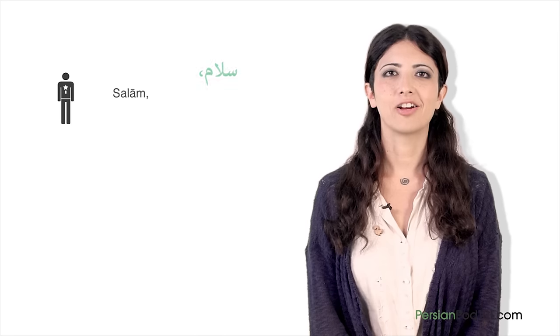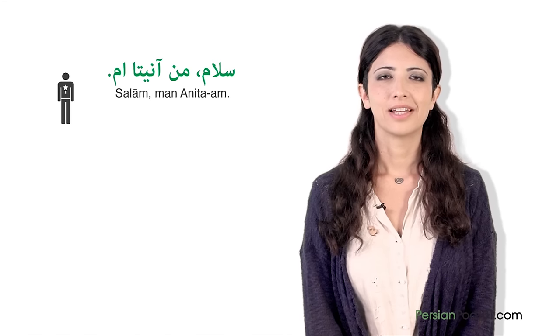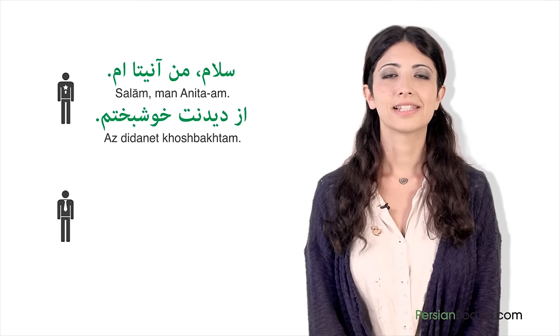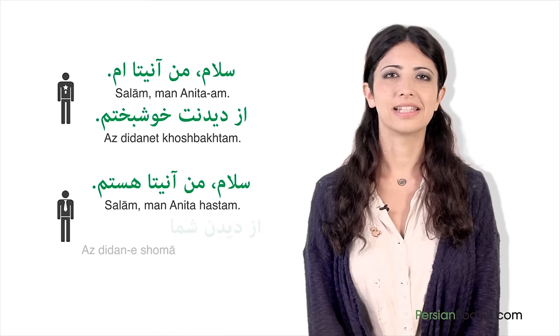Once again, the informal way to introduce yourself in Persian is: Salam, man Anita am. Az didanet khoshbakhtam. The formal way to introduce yourself is: Salam, man Anita hastam. Az didaneshoma khoshbakhtam. Now it's time for Anita's advice. When you introduce yourself, it's a good habit to shake hands in Persian culture. If you're not sure whether to use the informal or formal version, don't worry — if you use the full correct sentence with Persian people, they're definitely going to be impressed.